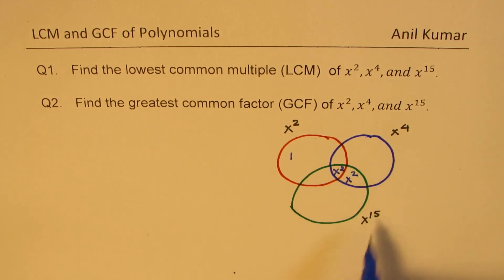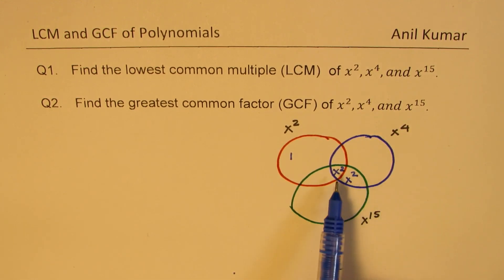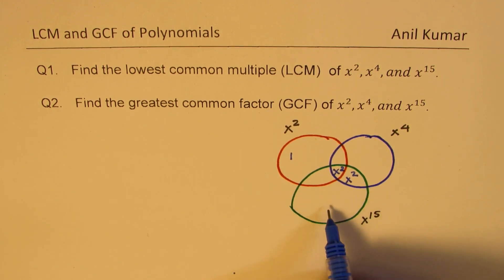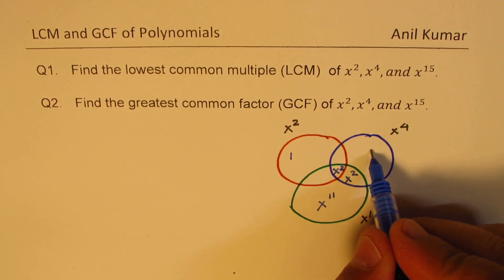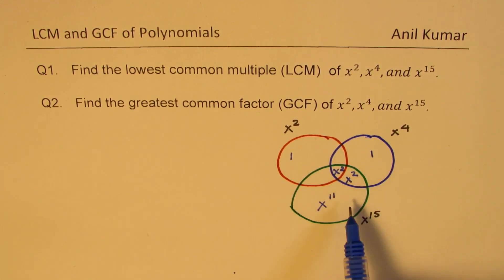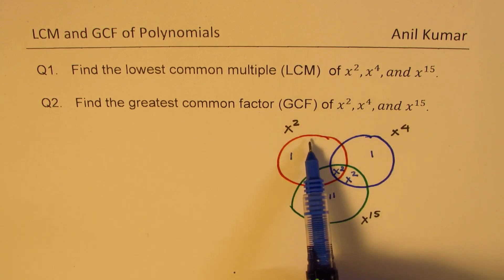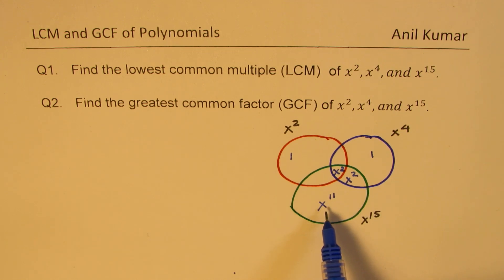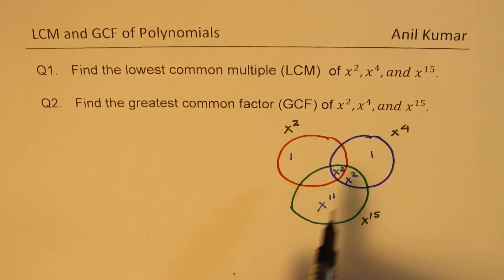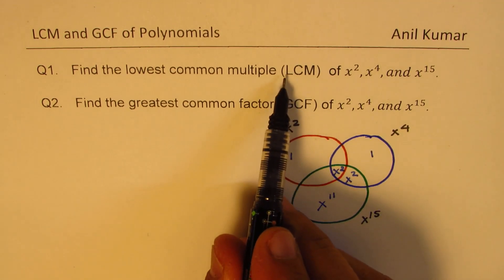That becomes common with x to the power of 15. Getting to x to the power of 15, we already have x squared and x squared, which is x to the power of 4. So now I could write x to the power of 15 minus 4, which is 11. So ultimately, if you notice, we have placed x squared in this circle, and then x to the power of 4 as the product of these two, and then x to the power of 11 right there. From here, you can see what is the greatest common factor and what is the LCM.